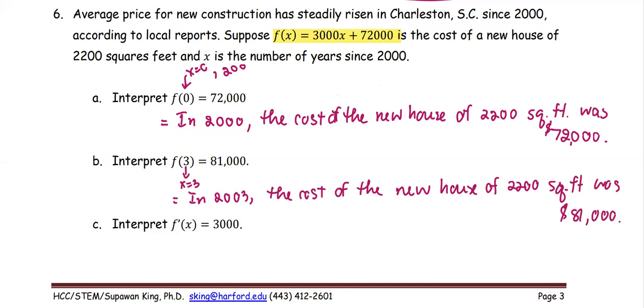In part (c), interpret f'(x) = 3000. f' is the slope of the tangent line or the rate of change. So we can say that in the year 2000,